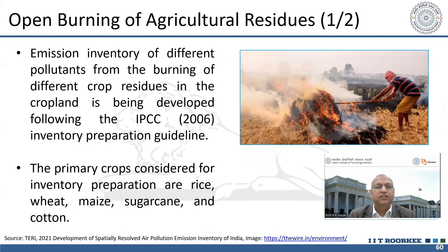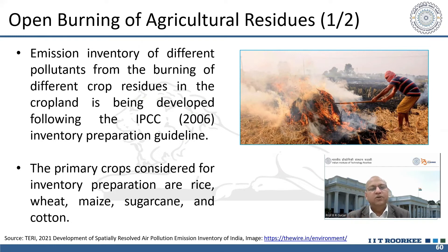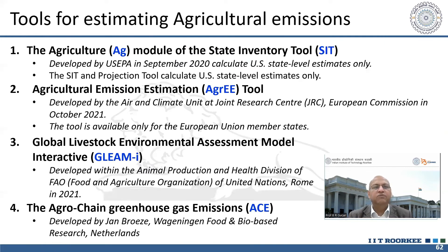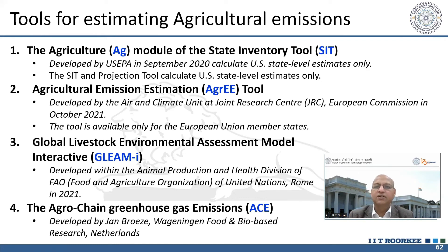Open burning of agricultural residue — particularly in northern India in winter — causes a lot of smoke that contributes to Delhi's air pollution and deteriorates air quality. This is essentially a regional-scale problem. Simple relationships are used for estimating pollutant emissions from different agricultural activities. Various tools and models are available for agriculture emissions estimation, similar to those for transportation and industrial sectors. Alternatively, a spreadsheet model can be used — it is not complex when you have activity data and emission factors.